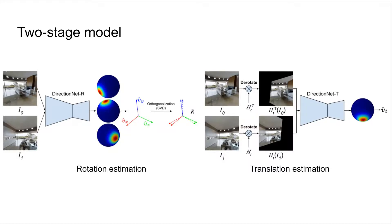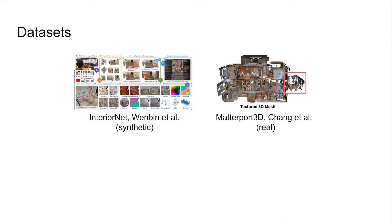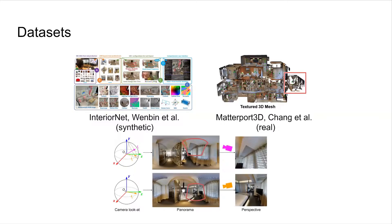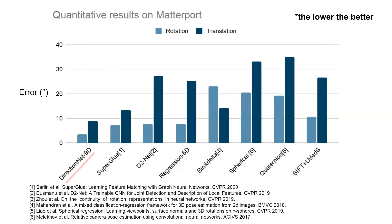We train our model sequentially with losses on both the directions and the distributions. We evaluate our method on challenging synthetic and real indoor datasets constructed from InteriorNet and Matterport 3D. We generate image pairs by sampling pairs of panoramas from a common scene, then projecting them to overlapping perspective views. We compare geodesic errors measured in degrees for both rotations and translations with regression and feature-based methods. DirectionNet outperforms all baselines and achieves near 50% error reduction over direct regression methods.